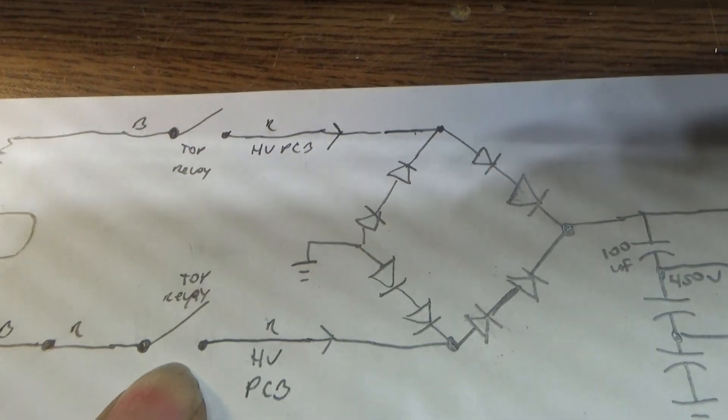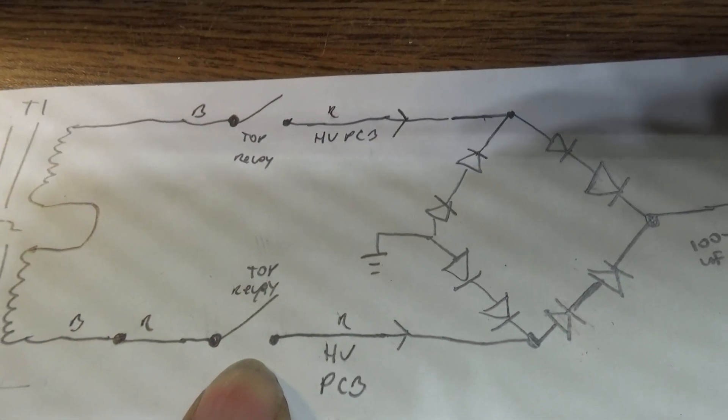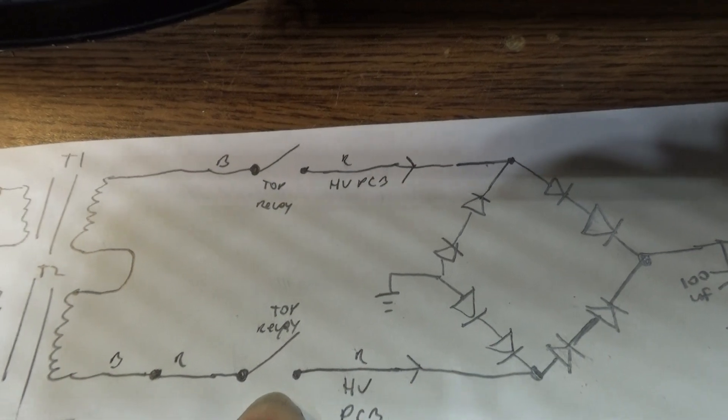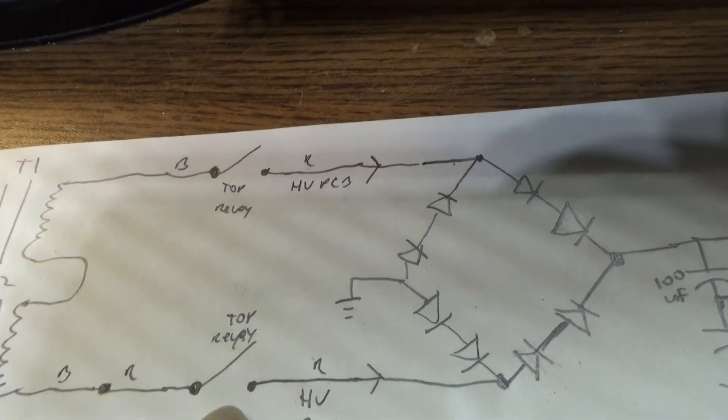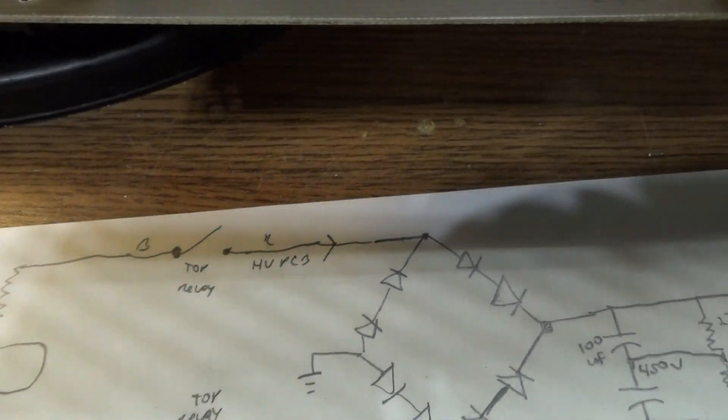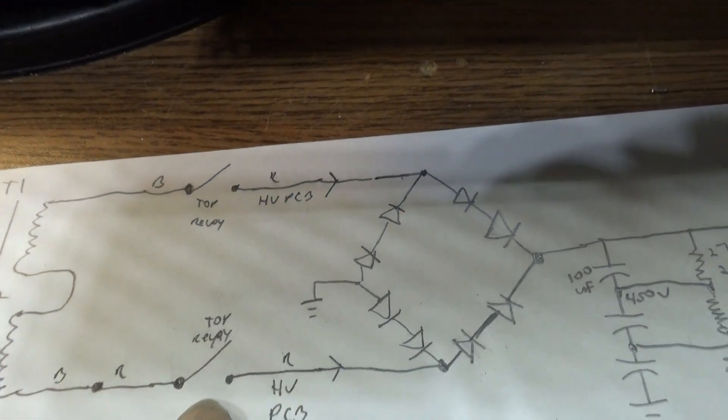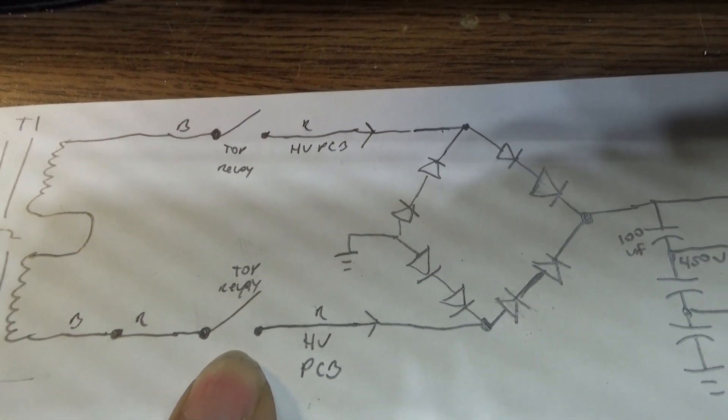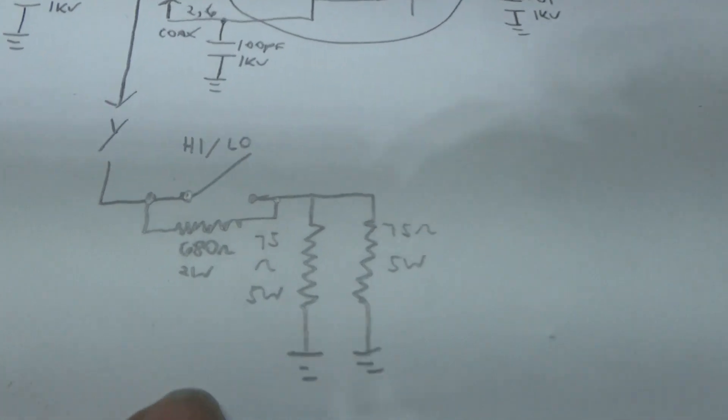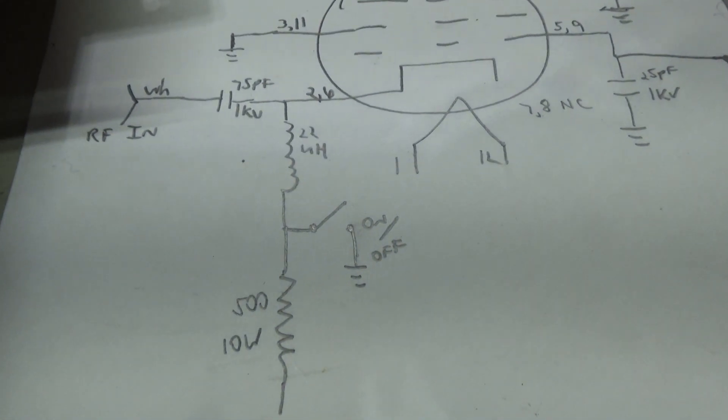But another question for the experts out there - I think I know the answer but kind of confirming from an expert - do you really need to switch both legs of the high voltage? Can you just switch one, which is what Palomar and all that do? But most Palomars use a voltage doubler, so I don't know if that has anything to do with it. So my two questions are: do you actually need to switch both legs of the high voltage transformer, and again about that on-off switch on the input.